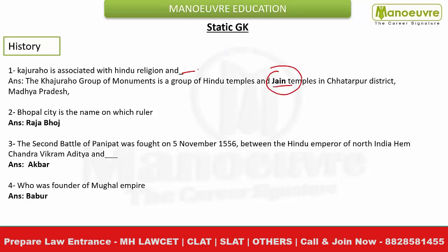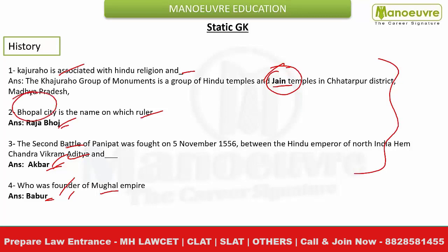The right answer was Jain religion. The second question was about the name of Bhopal City, which is named after an Indian ruler - this is ancient history. The third question was from medieval history about Akbar, and one more question from the Mughal period about Babar - who was the founder of the Mughal Empire? The right answer was Babar. The Second Battle of Panipat was fought between Akbar and Hemu. These were quite easy questions.